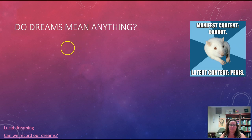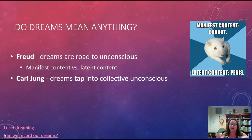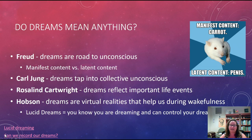Dreams have been discussed by many theorists. Freud thought dreams were the royal road to the unconscious — he distinguished manifest content (what you actually dreamed) from latent content (what the dream really meant). Carl Jung thought dreams helped us tap into a collective unconscious shared by all humans. Cartwright thought dreams reflect important life events, while Hobson thought they were virtual reality experiences that help us navigate the wakeful world.